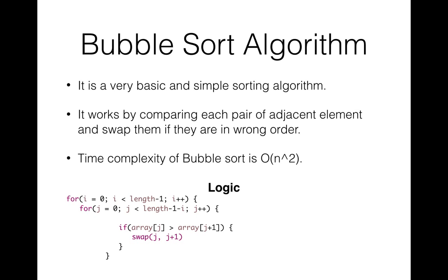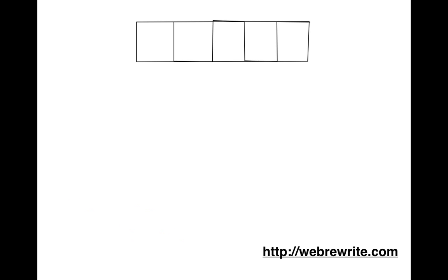Suppose I have an array which has following elements: 6, 4, 1, 2, 5. It's an unsorted array and we are going to sort this using bubble sort. There are five elements, so we have n minus 1 iterations, which means there will be four iterations.